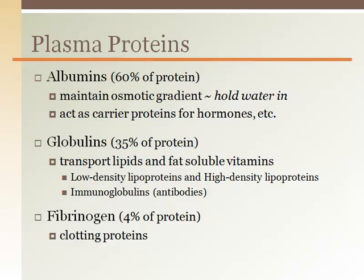Fibrinogen is 4% of the 7% of plasma proteins and is also made in the liver. Fibrinogen is used to form blood clots in the event that a vessel wall is damaged and a seal needs to be made to prevent blood loss.